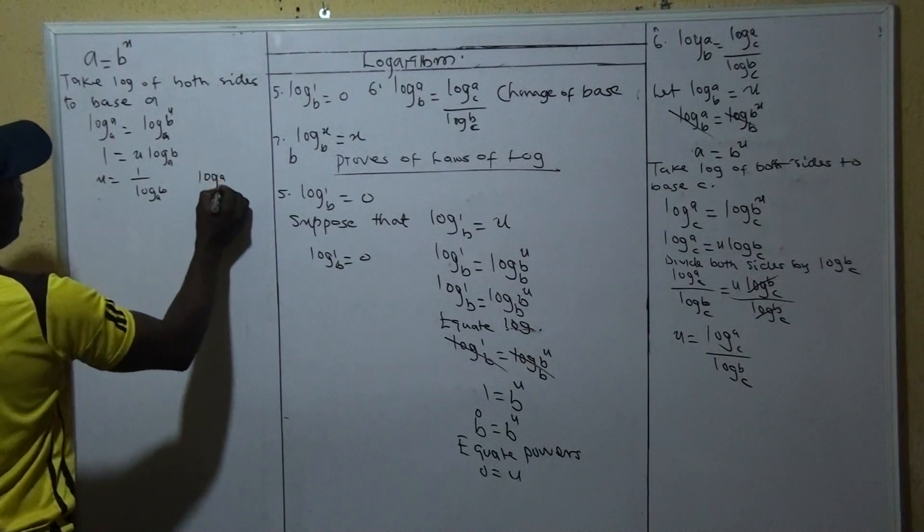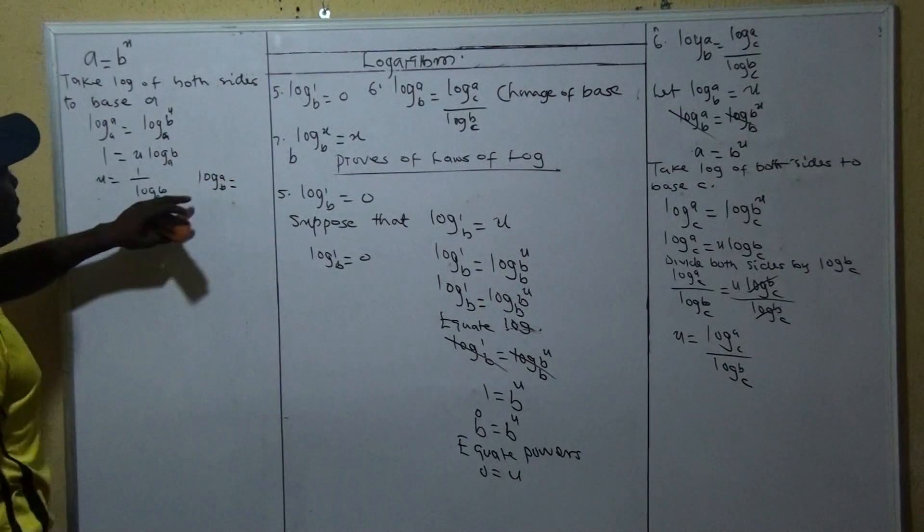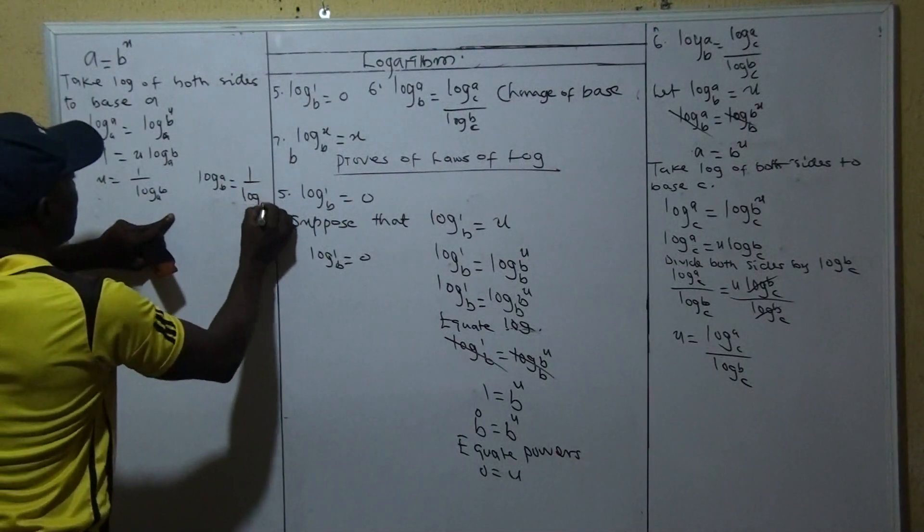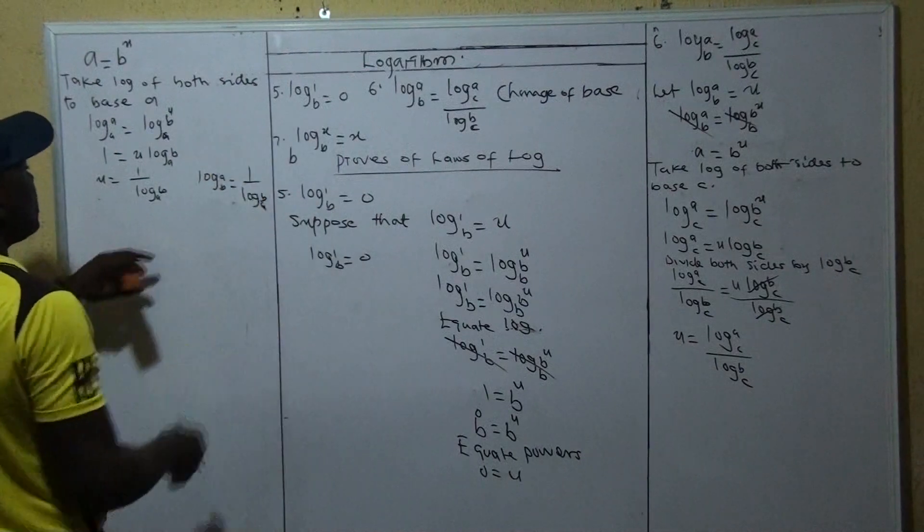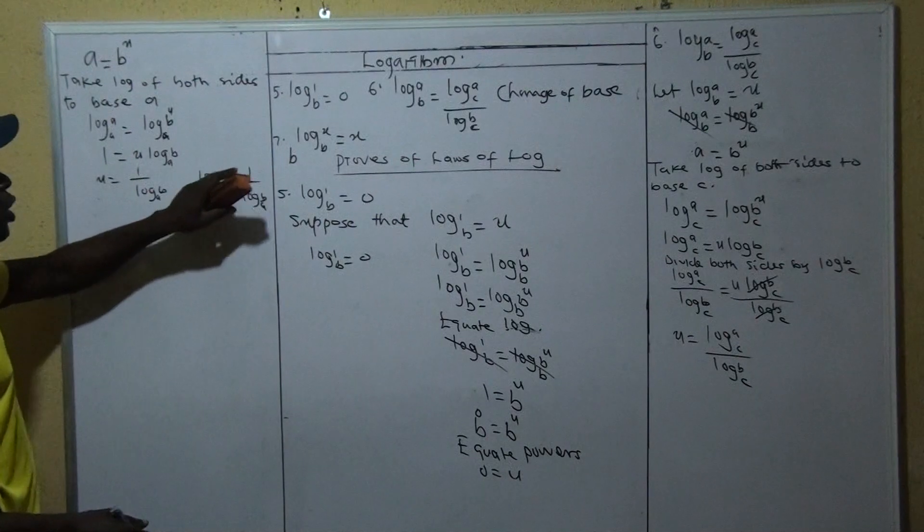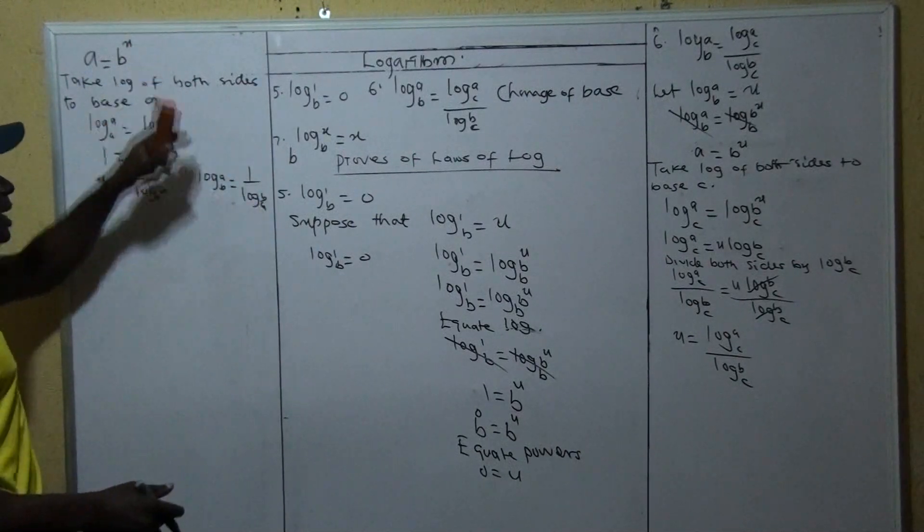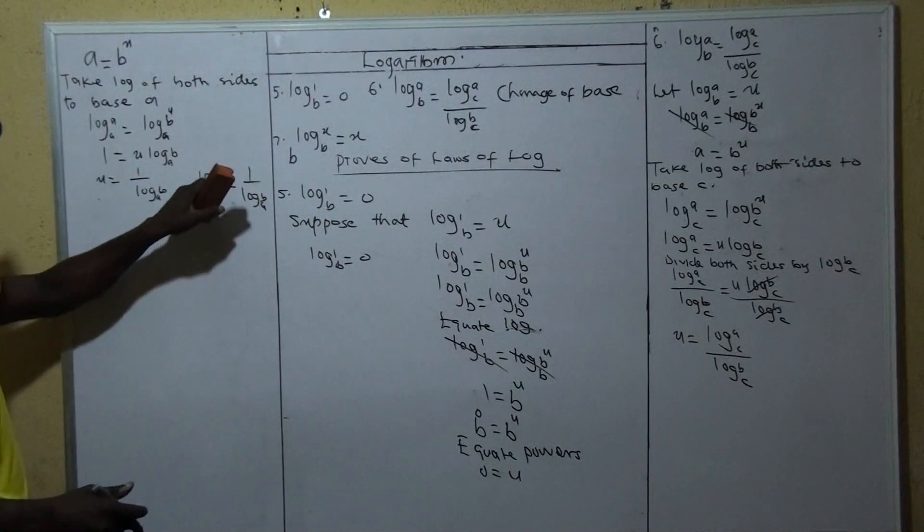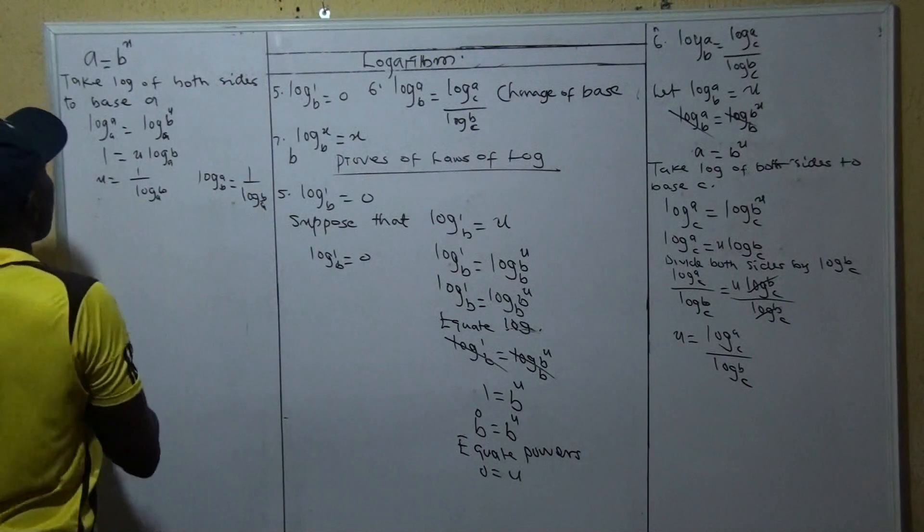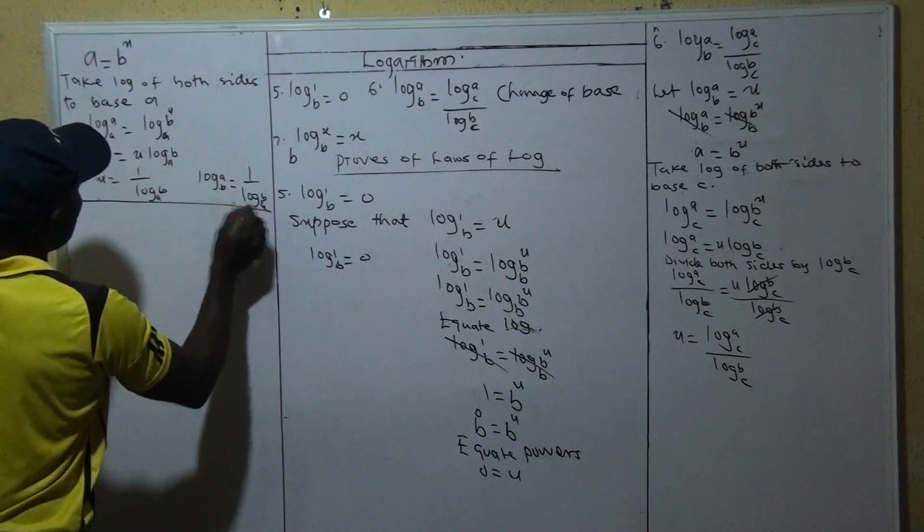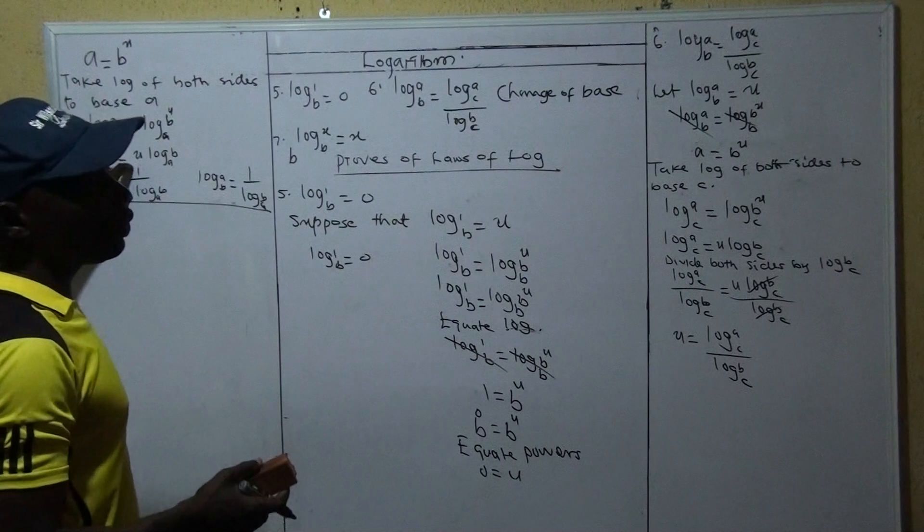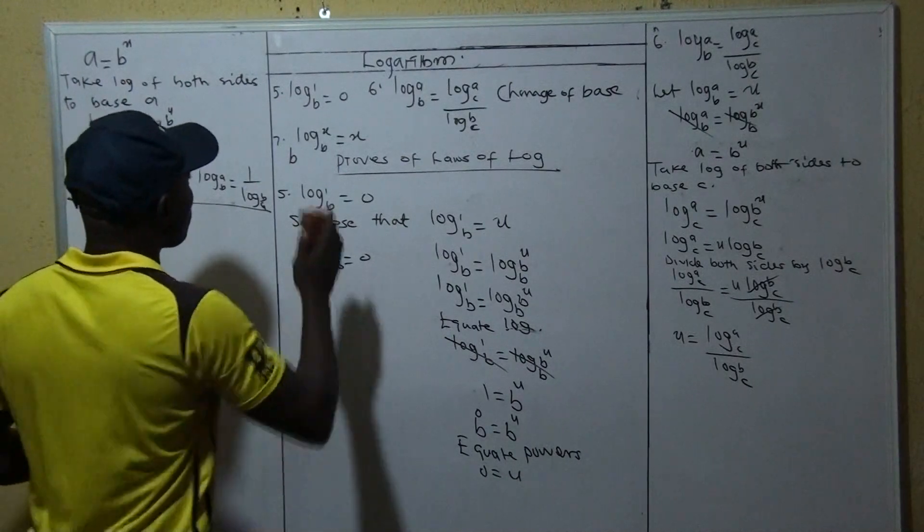So that your U becomes one over log B to base A. So what I'm trying to do here is that if you have log A to base B, and if you want to make your A to be base, your answer will be one over log A to base B. I'll change the base now, it's in base B before, now it's in base A. So if you want to change to this one, it's one over, the base will not change, this one will become the log, and the log will become the base. So that's one way we can also do it, because what we are going to do in a practical example now, this is the one we are going to use.